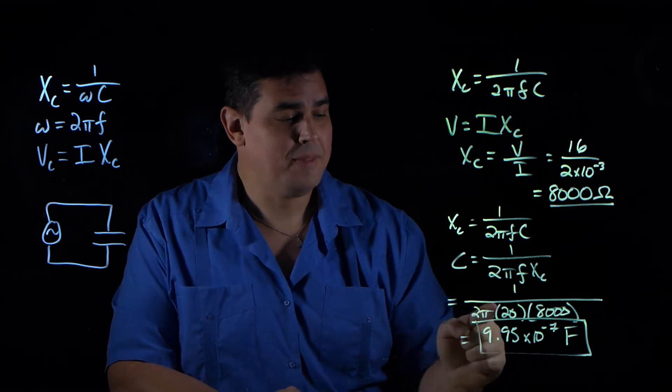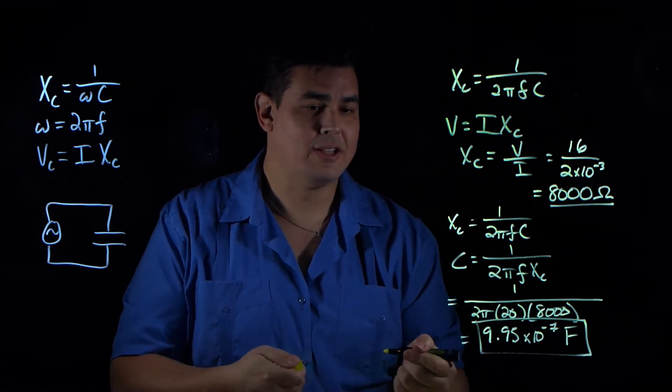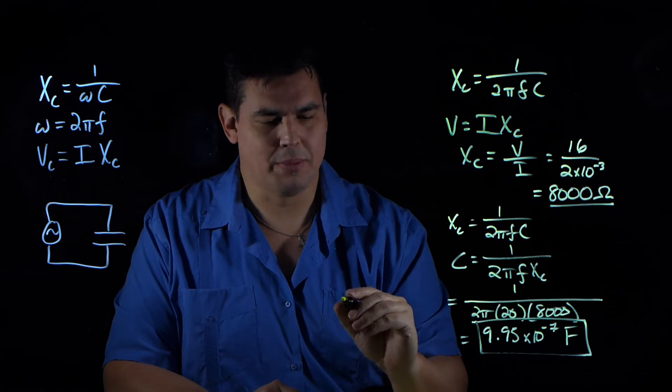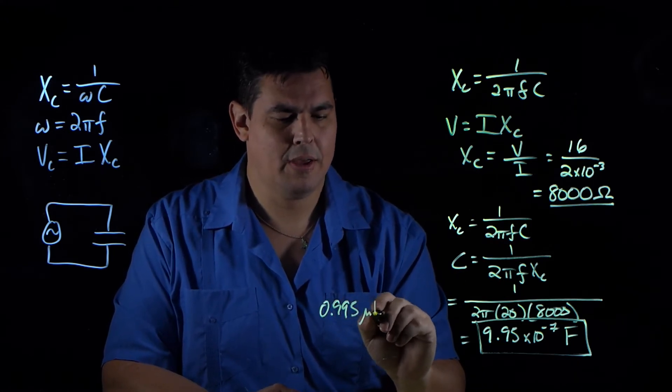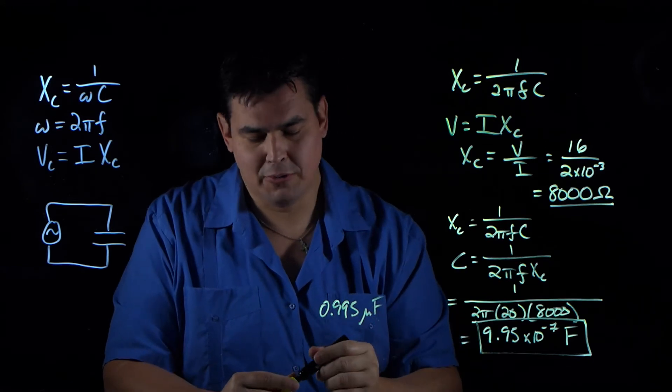So that gives me 9.95 times 10 to the minus 7th Farads, which would be the same thing, if you want to put it in simpler terms, 0.995 microfarads, because that would move it one decimal over.